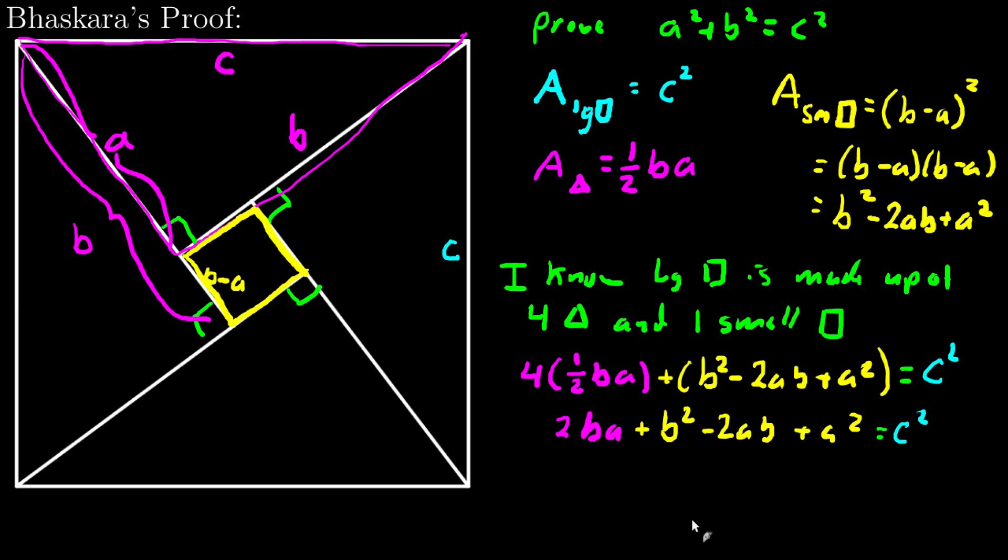And combine like terms. The 2ab and the 2ba, those are equivalent because multiplication is commutative. So those cancel out. I'll reorder this. So I have b squared plus a squared, that's the same thing as a squared plus b squared. And that has to equal c squared. And so this has been proven.